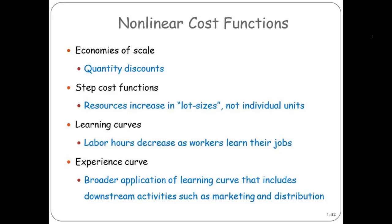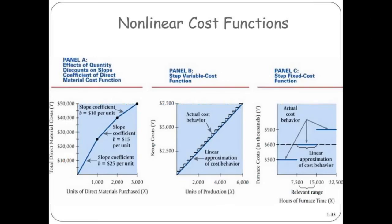Continual improvement. An experience curve is kind of like a learning curve. These are examples of how things are nonlinear. This is bulk discounts — this is a step function.